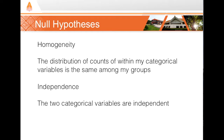In testing for homogeneity, the null hypothesis is that the distribution of counts within the categorical variable is the same among populations. In testing for independence, the null hypothesis is that the two categorical variables are independent of each other.